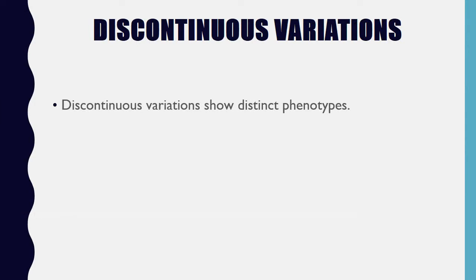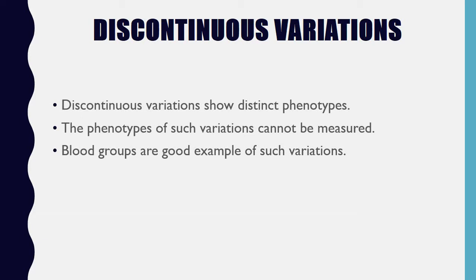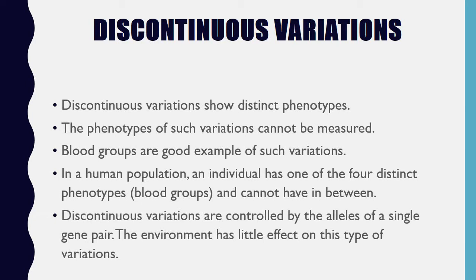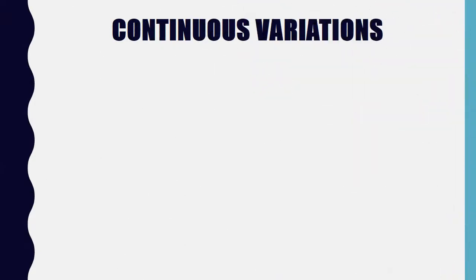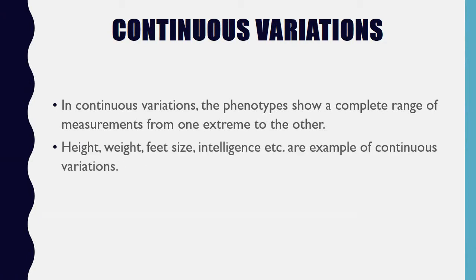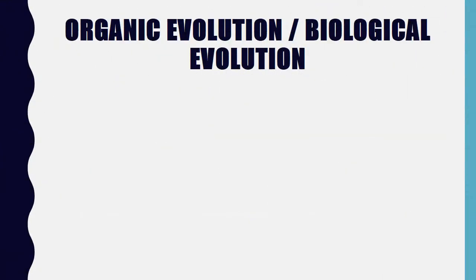Discontinuous variations show distinct phenotypes. The phenotypes of such variations cannot be measured on a continuum. Blood groups are a good example — in a human population, an individual has one of four distinct blood group phenotypes and cannot have one in between. Discontinuous variations are controlled by the alleles of a single gene pair, and the environment has little effect on this type of variation. Continuous variations: the phenotypes show a complete range of measurements from one extreme to the other. Height, weight, foot size, intelligence, etc. are examples of continuous variations. These are controlled by many genes and are often affected by environmental factors.